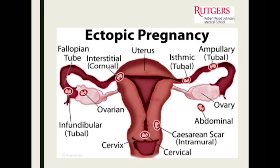You can have ectopics on the ovary, in a C-section scar, cervical ectopics, or right where the tube meets the uterus — so they can be in interesting places. The medical or surgical management differs according to where they are. The key point is to think about the diagnosis.